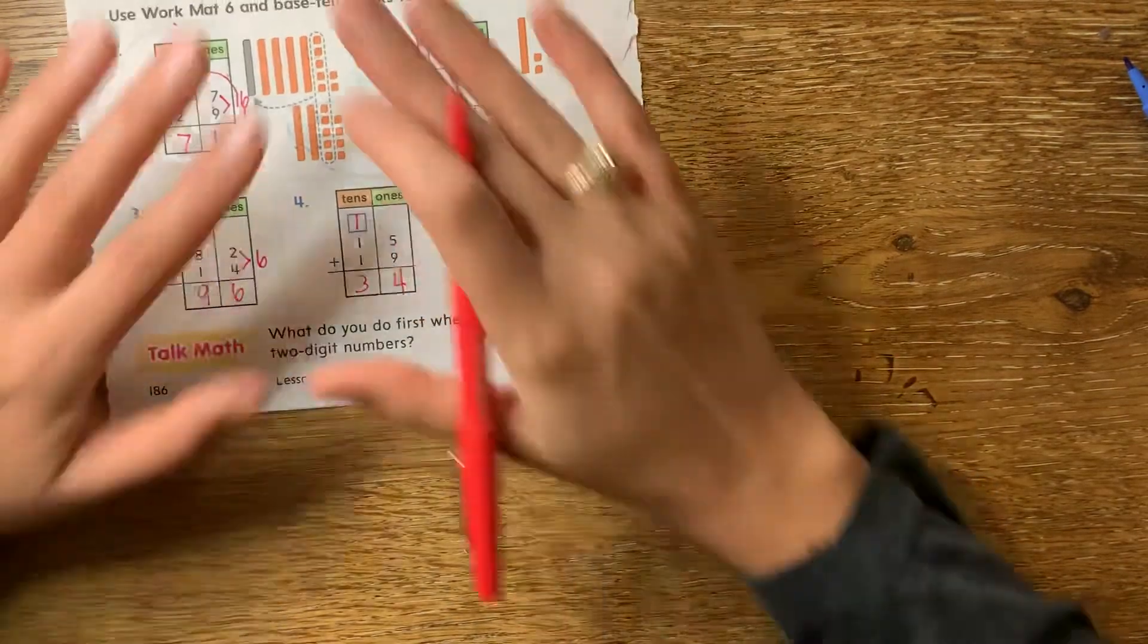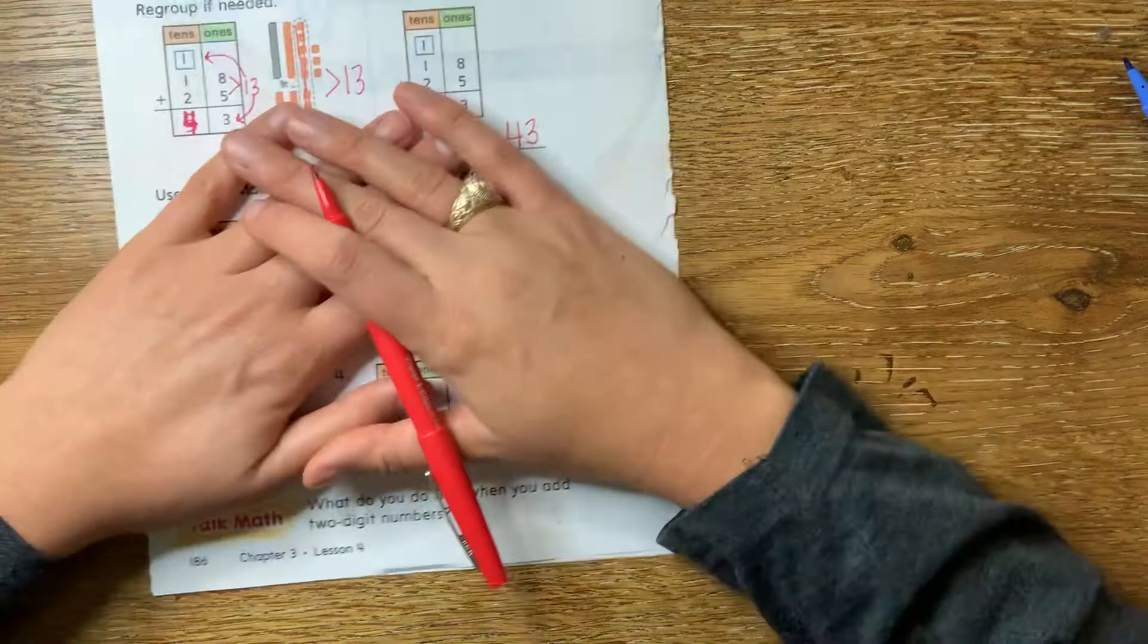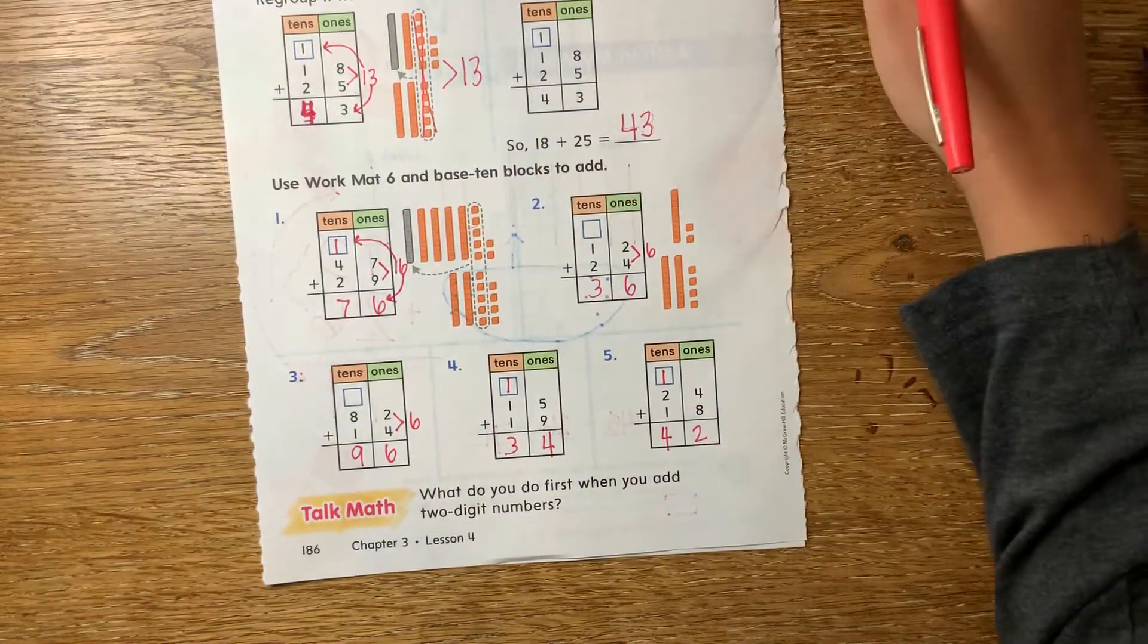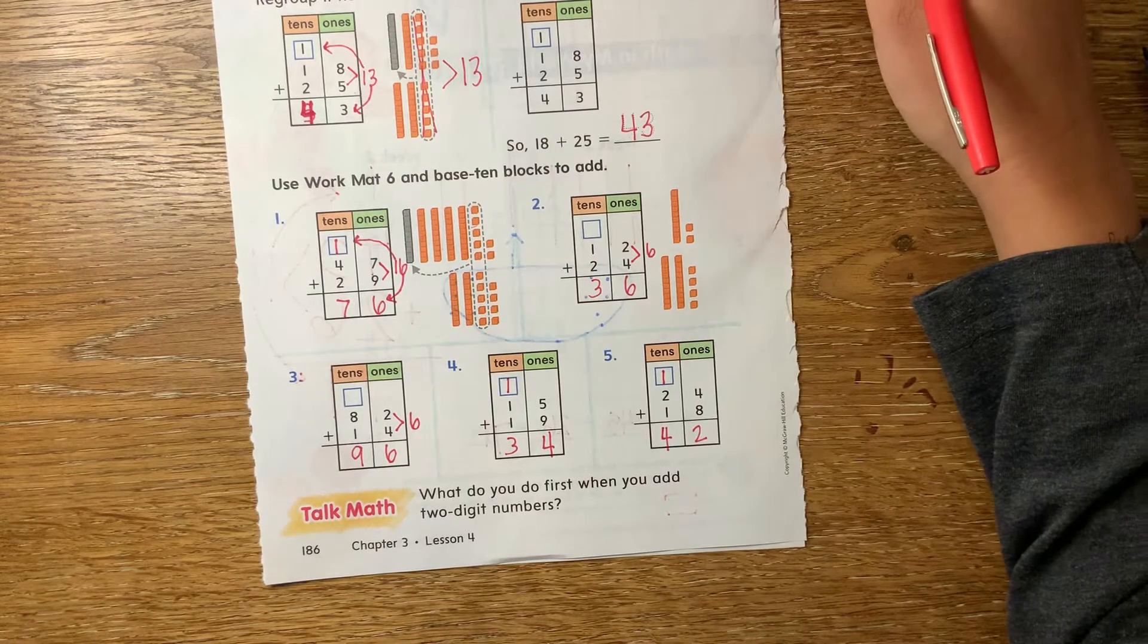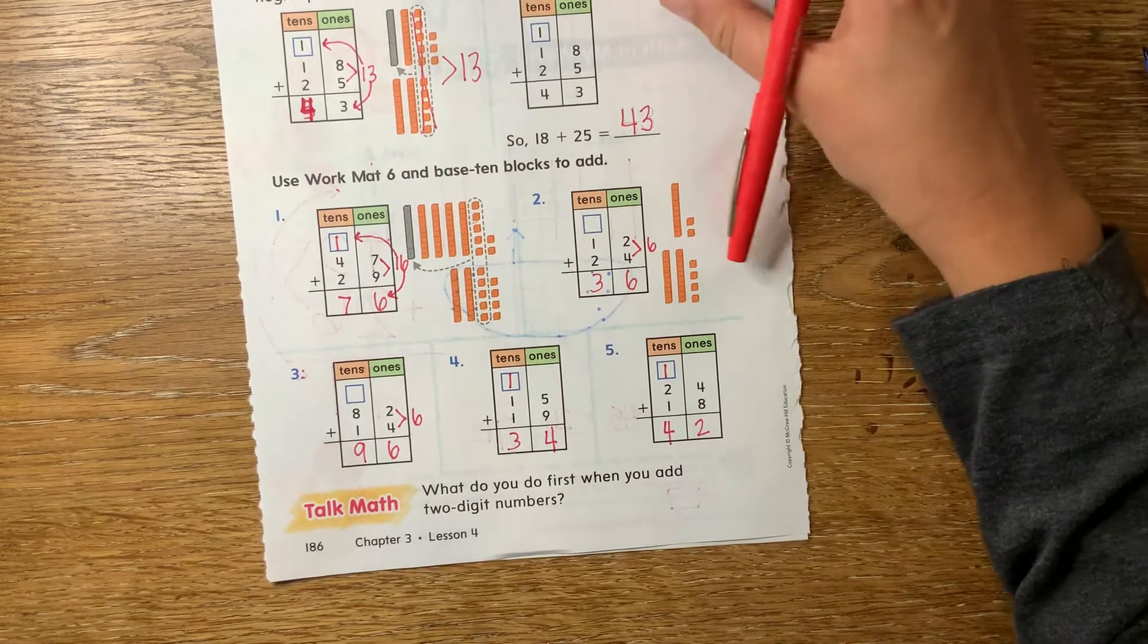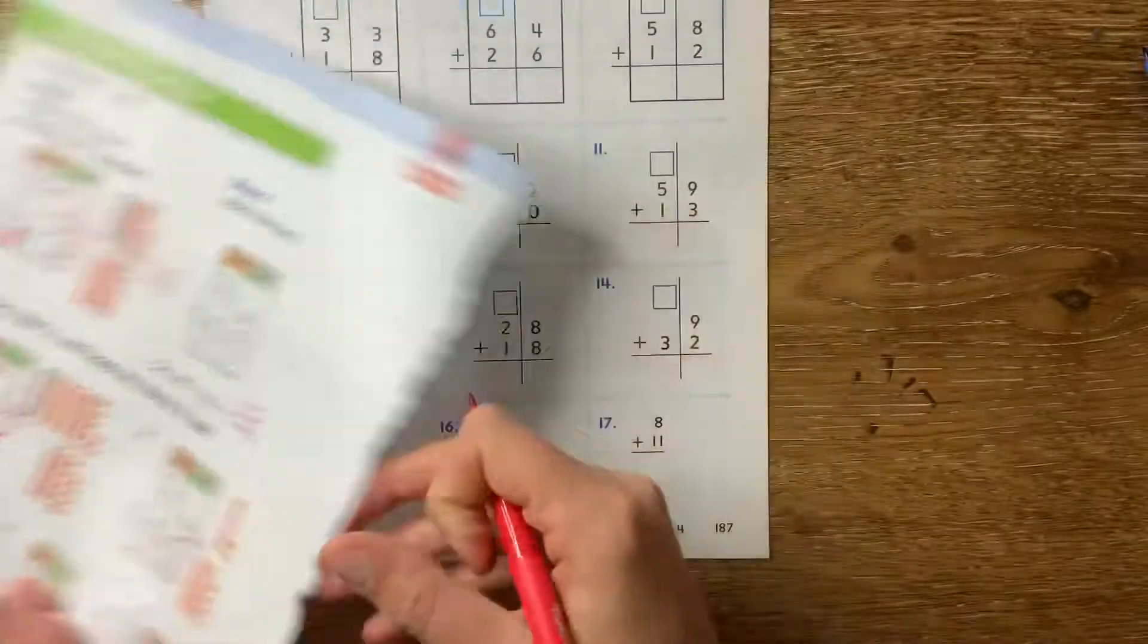So the first thing you're going to do after you finish this video is you're going to go to seesaw and you're going to do that example problem so that I can see if you understand. Okay. After you do the example problem, you're going to start the independent practice.